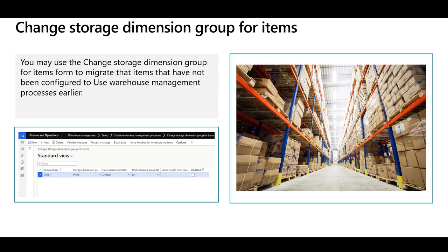Now let's move to the second feature: Change Storage Dimension Group for Items. You may use this feature to migrate standard inventory items that were initially created without the advanced warehouse management process. Using this function you can associate a new storage dimension group at the item level — one that uses the advanced warehouse management process, reservation hierarchy, and unit sequence group — all in one step.